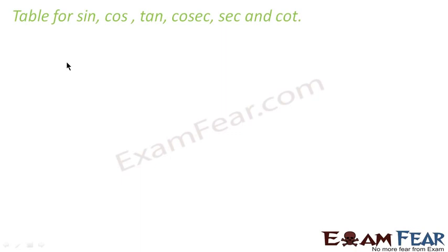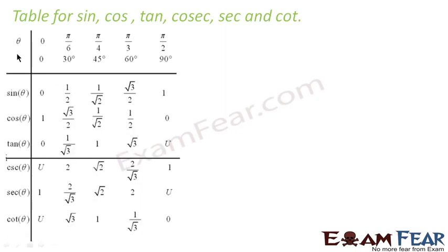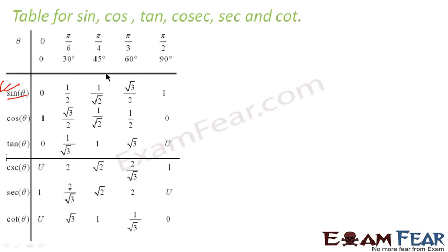Let's see the table for sin, cos, tan, cosec, sec and cot. The theta values are in both radians and degrees — both are the same. Sin 0° is 0, sin 30° is 1/2, sin 45° is 1/√2, sin 60° is √3/2, and sin 90° is 1. We also have sin 35°, sin 40°, sin 55°, but those are difficult to start with. Knowing sin 0°, 30°, 45°, 60° and 90° is more than enough for the kind of questions we will get.